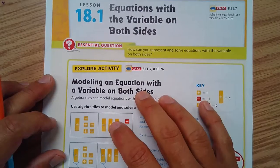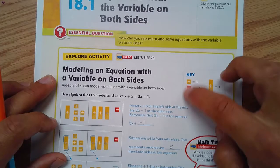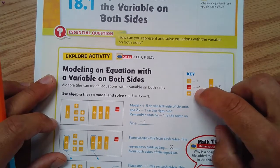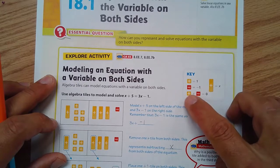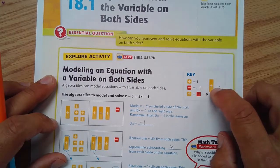We're going to start with this explore activity and model an equation with variables on both sides. A note here: when you see the red tile, that counts as a negative one. These form zero pairs, and the long rectangle represents x.